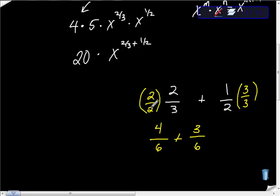Four-sixths is the same as two-thirds, and three-sixths is the same as one-half. So we haven't really changed anything. When we add those, we get seven-sixths.